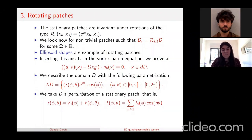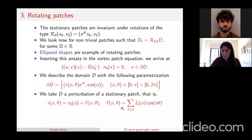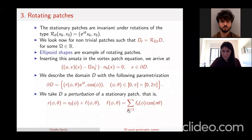We consider the domain D as a perturbation of a stationary patch. We take r(phi, theta) equal to r₀(phi) — corresponding to the stationary case — plus a perturbation f that depends on phi and n*theta. This perturbation is taken as a sum of cosines starting from n equal to one, because for n equal to zero the cosine is one and that can be absorbed into the initial domain — it is not interesting for us.